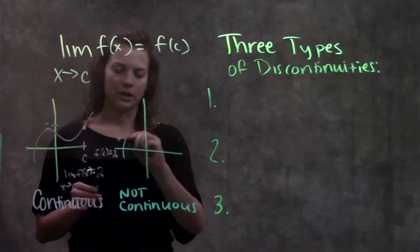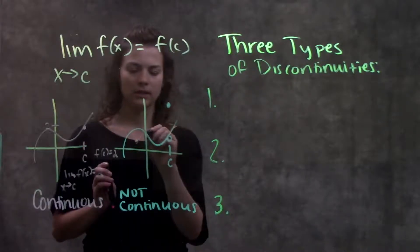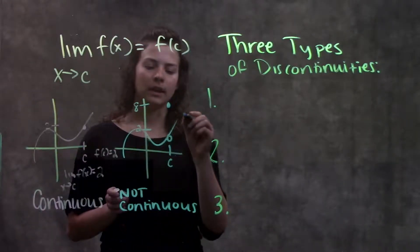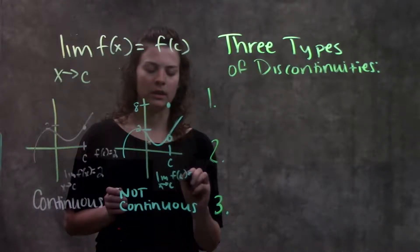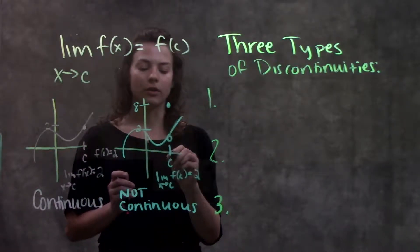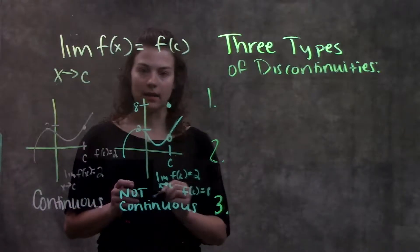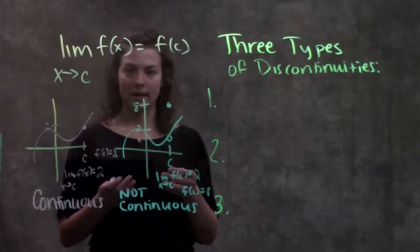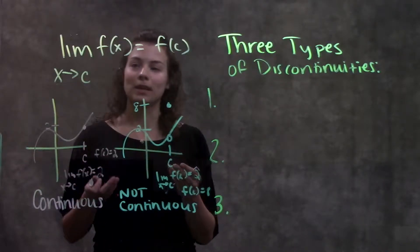Now compare that to a similar function, except there's an open circle at x equals c. Going through the same process: the limit as x approaches c from both sides is still equal to 2. But when we ask what the function is actually defined at x equals c, we see the function is defined at a value up here — f(c) is equal to 8. Since the limit is not the same as what the function is defined at, this function is not continuous. This visually represents what the definition says.